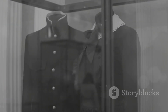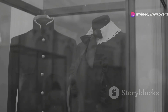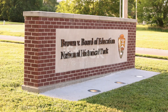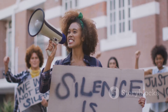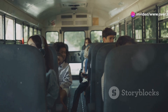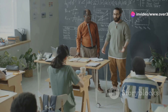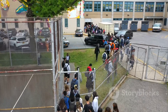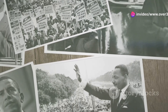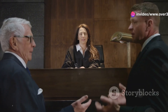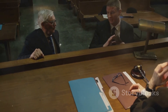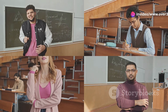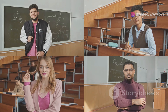The 20th century witnessed significant milestones in the fight for educational equality. The landmark Brown v. Board of Education Supreme Court ruling in 1954 declared segregation in public schools unconstitutional. This decision was a major victory for the civil rights movement. The ruling paved the way for integration and affirmed the principle that separate but equal was inherently unequal. However, the process of desegregation was long and arduous, facing resistance and setbacks in many parts of the country. The Brown v. Board of Education decision stands as a testament to the power of litigation and social activism in advancing educational justice, transforming the landscape of American education.